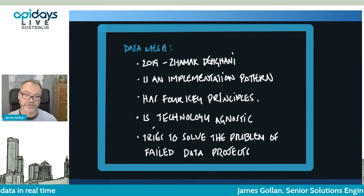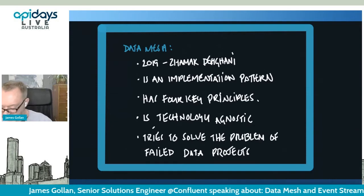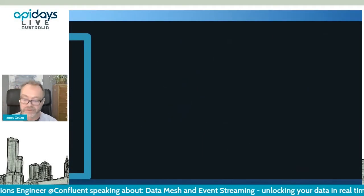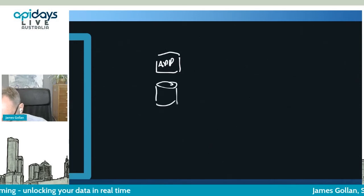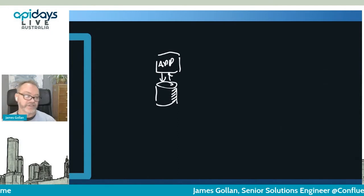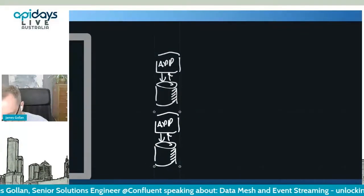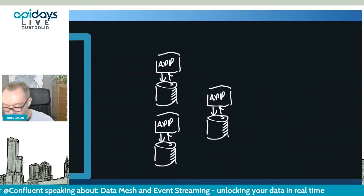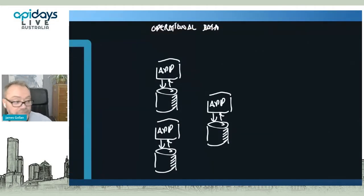Really the main reason that data mesh came about was to solve the problems like these failed data projects. So ThoughtWorks had to look at these projects and the failure modes and why they were failing. Big data projects that had very ambitious goals but weren't delivering the business results that were expected. And so the common approach that they were seeing was this idea of applications that were backed by some kind of data store.